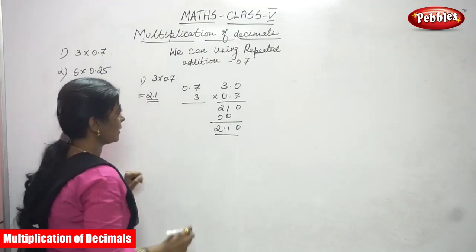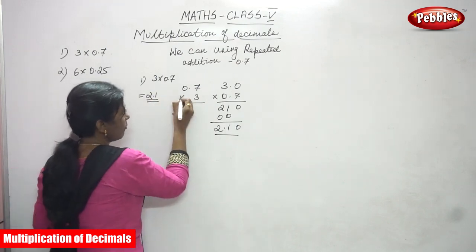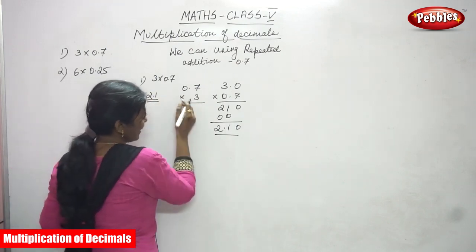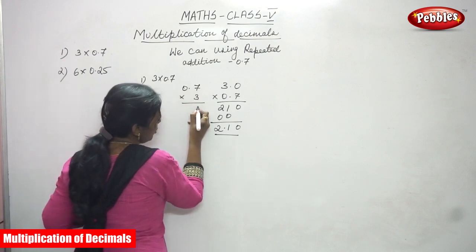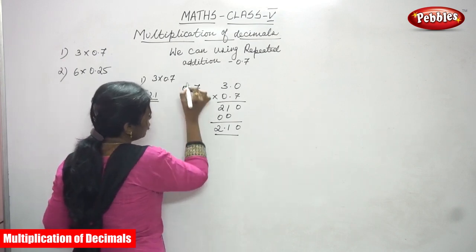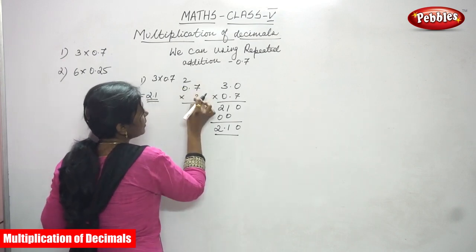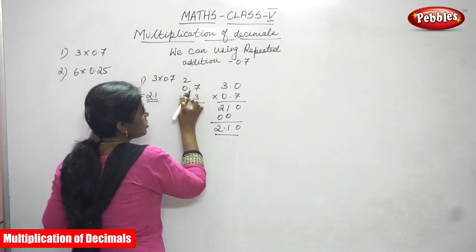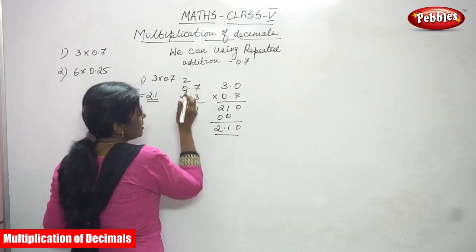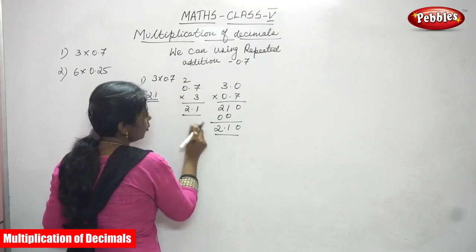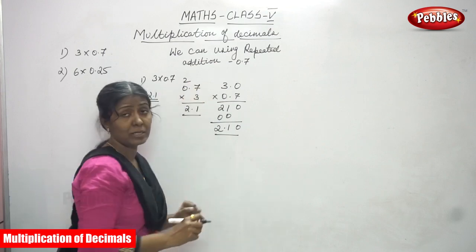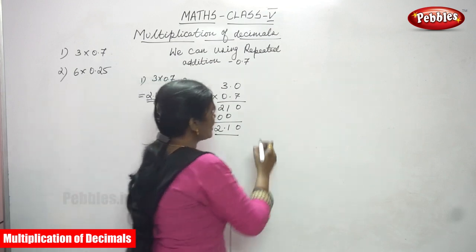You can also multiply directly: 3 into 7 is 21, carry 2. Then 3 into 0 is 0, plus 2 is 2. So the answer is 2.1. Both methods give the same answer.